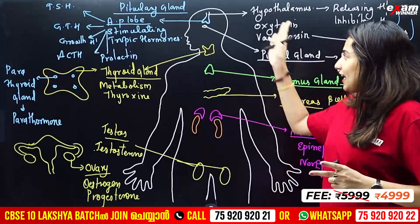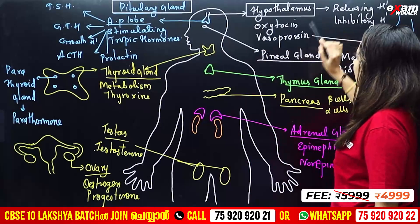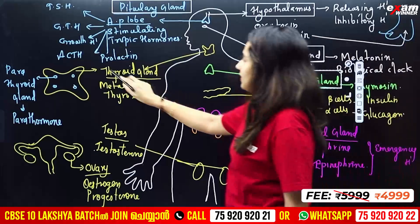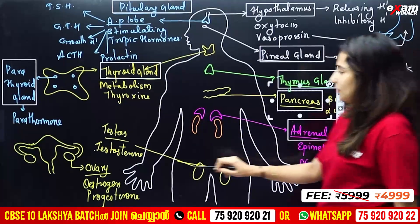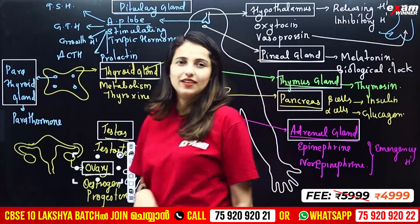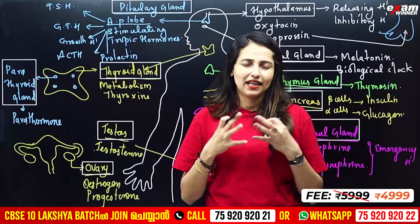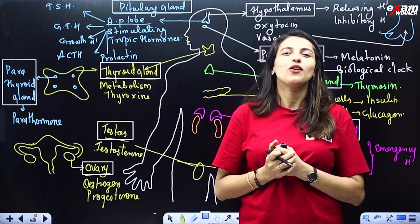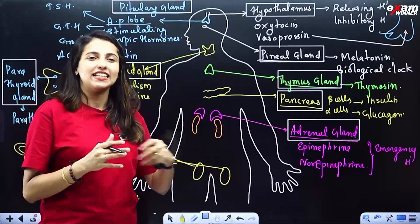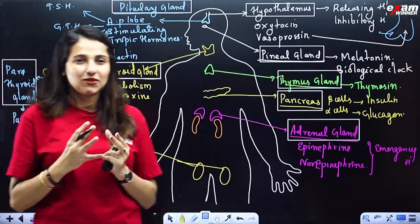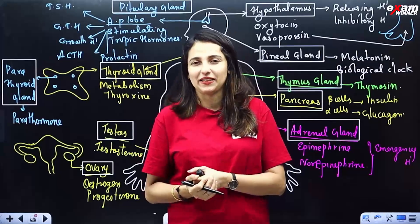In our body, the endocrine glands include: pituitary gland, hypothalamus, pineal gland, thymus gland, thyroid gland, parathyroid gland, adrenal gland, pancreas, testes and ovary. These glands secrete hormones that control most of the activities in our body. Thank you.